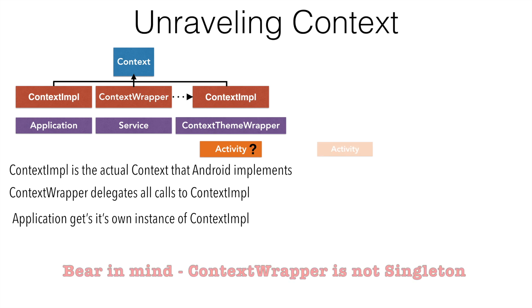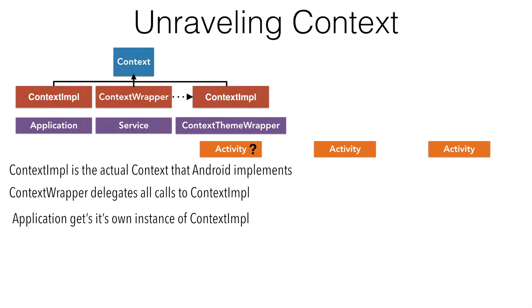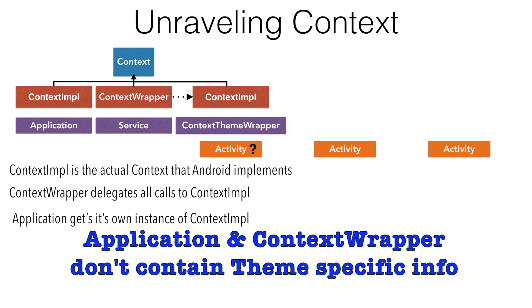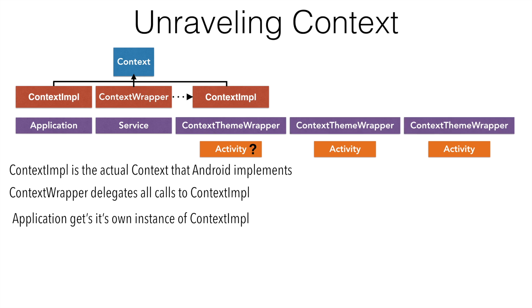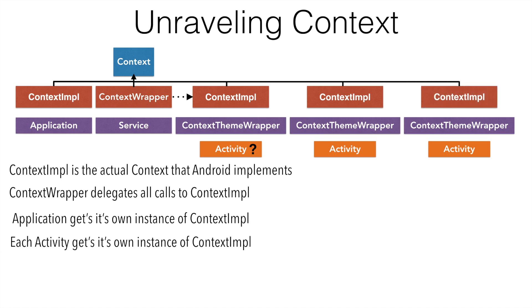What about activity? Activity cannot use the context implementation of the application because activities have very specific UI themes. That is why they extend ContextThemeWrapper, not ContextWrapper. Android once again provides individual context implementation objects to the ContextThemeWrapper classes, and that is why each activity gets its own context implementation.